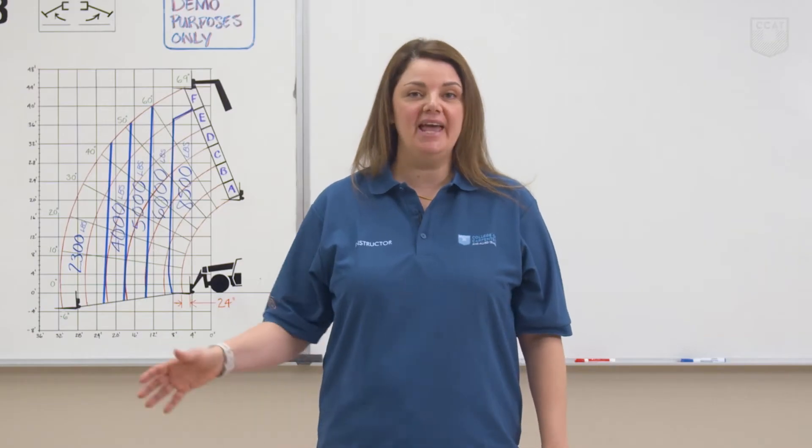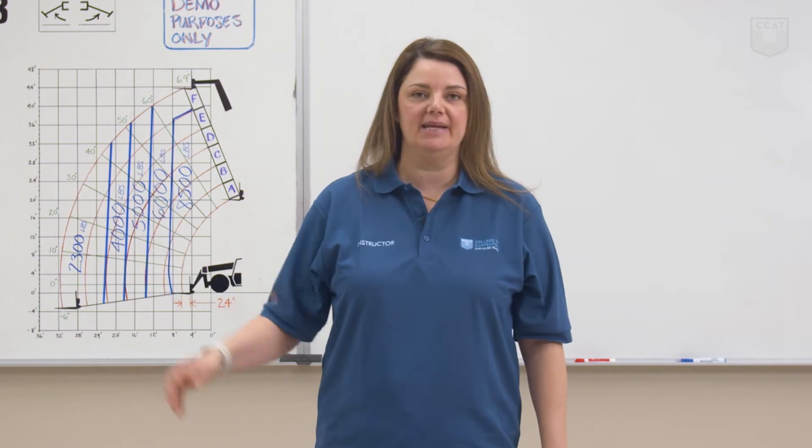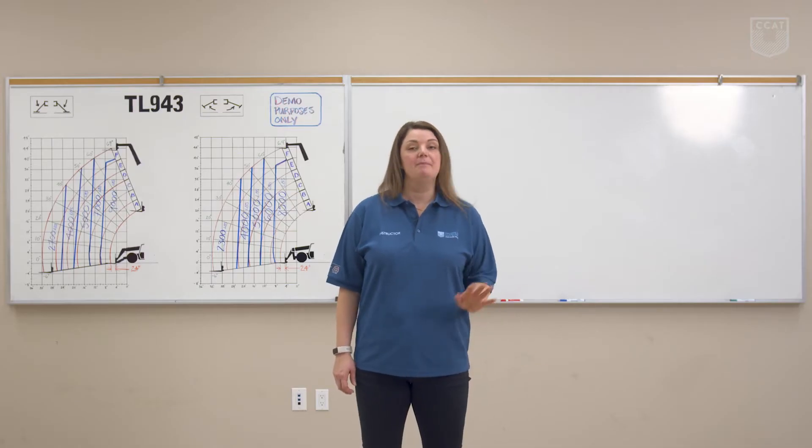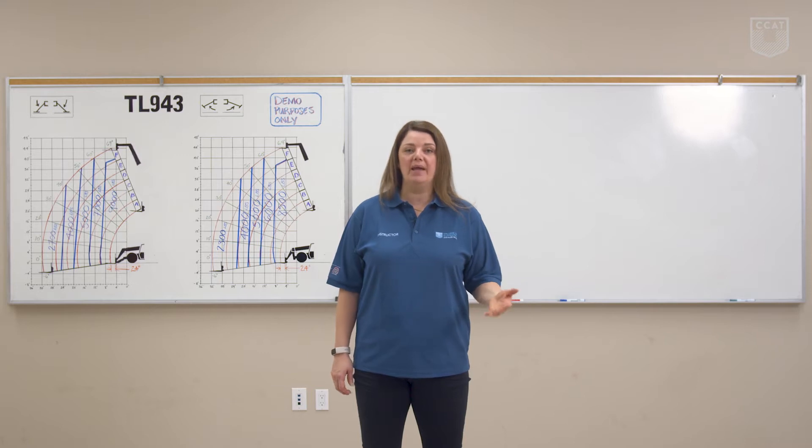We'll look at how the capacity of the machine changes with the height, reach, and angle that the load must be picked or placed. There are many ways that the weight of the load can be calculated. The best way to calculate the load is by weighing it on a scale. Sometimes the weight can be found on the bill of lading or on the shipping information.